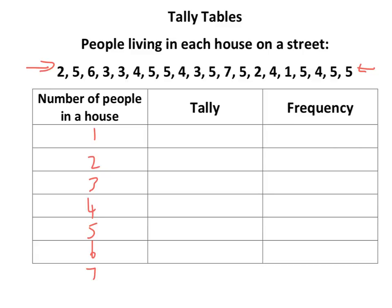What you do is approach this sort of stuff methodically. A tally is just putting a dash, and I would cross out each number in the data as I go. I'll do this quickly — shout if I miss one.